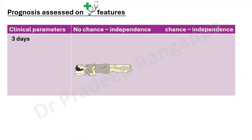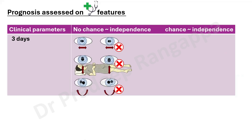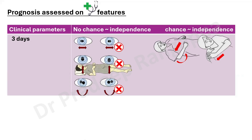At day 3, if there is still decorticate or abnormal flexor response and no eye movement, that means there is no chance of gaining independence or recovery. But if at day 3 they have a flexor response or are localizing to pain, the patient is clearly improving. If by day 3 the progression has happened from abnormal flexion and extension to eye movements and localizing, significant improvement has occurred and prognosis is good. All ranges of good eye movements by day 3 indicate likely functional recovery.